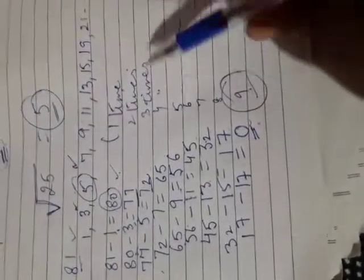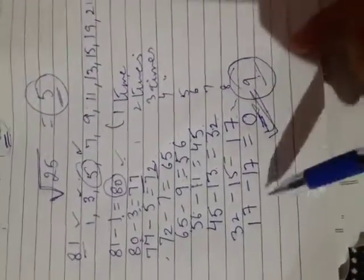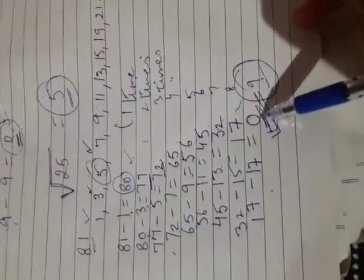After 9 times when we done subtraction, after 9 times we got 0 and stop. The answer we get 0, stop when the answer is 0.